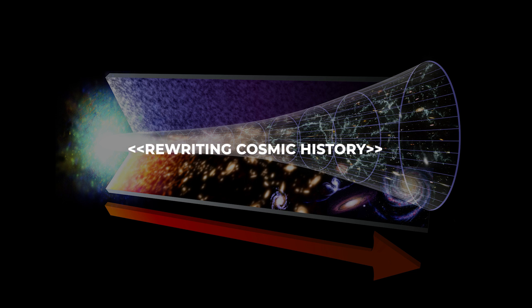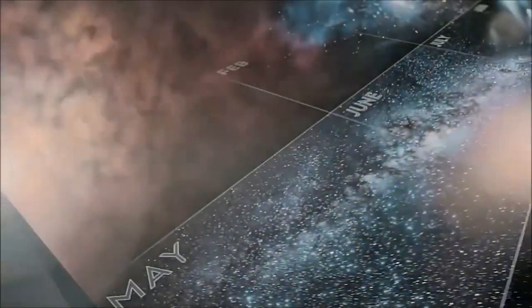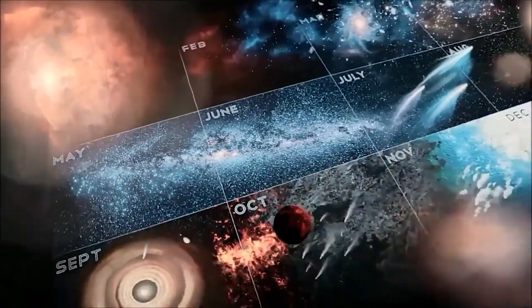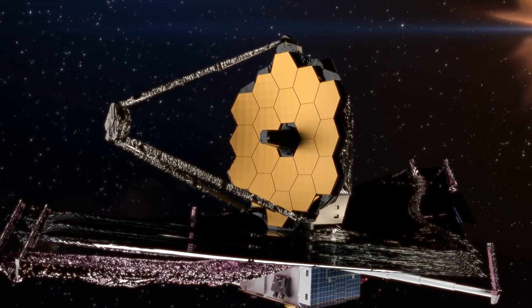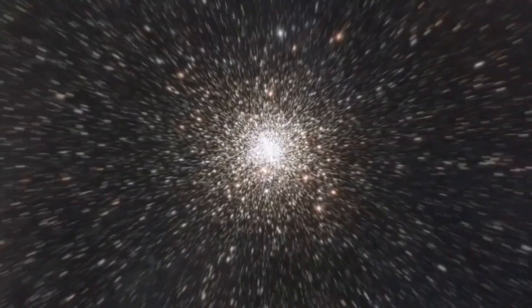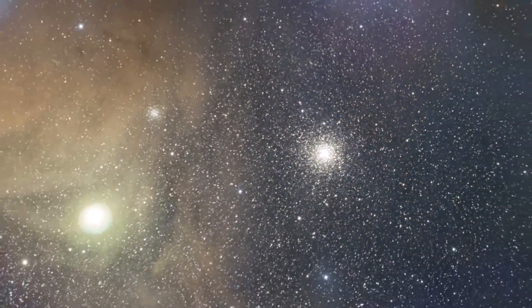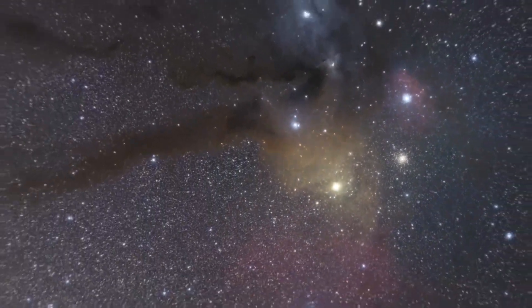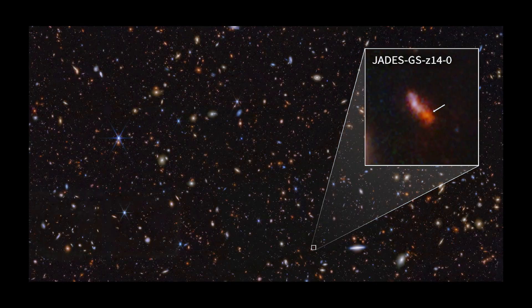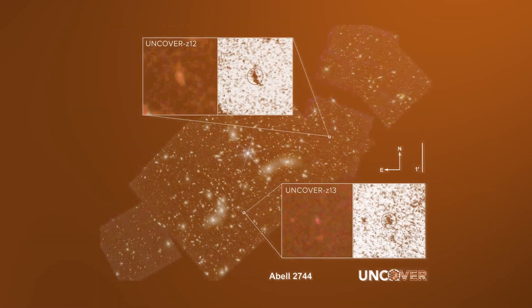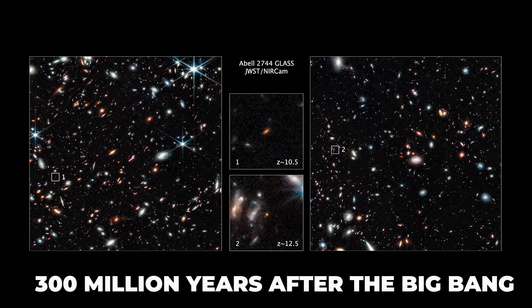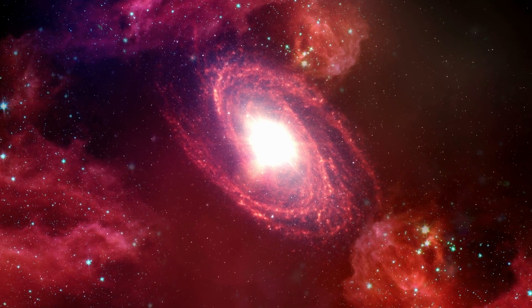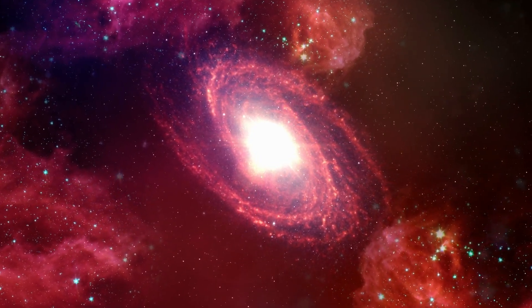Rewriting Cosmic History: The Universe's True Age. Recent discoveries have thrown our cosmic calendar into chaos, and the plot thickens with each new revelation from the James Webb Space Telescope. Let's piece together the clues. The enigmatic star cluster M92 pushes the boundaries of our cosmic understanding, flirting dangerously close to the supposed age of the universe itself. Then there are impossibly mature galaxies lurking in the cosmic dawn, spotted by James Webb just 300 million years after the Big Bang. Their existence challenges everything we thought we knew about galaxy formation and evolution.